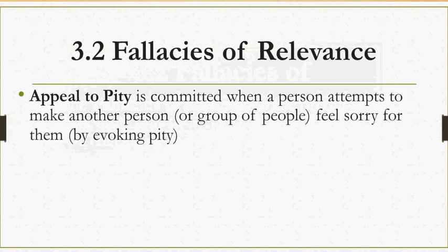The second fallacy is appeal to pity. This one is committed when a person attempts to make another person or a group of people feel sorry for them by evoking pity. Evoking pity — making someone feel sorry for you — is logically irrelevant to whatever conclusion you're trying to prove. If you're trying to prove a conclusion, there should be good logical reasons for why that conclusion would follow, and making someone feel sorry for you is logically irrelevant.